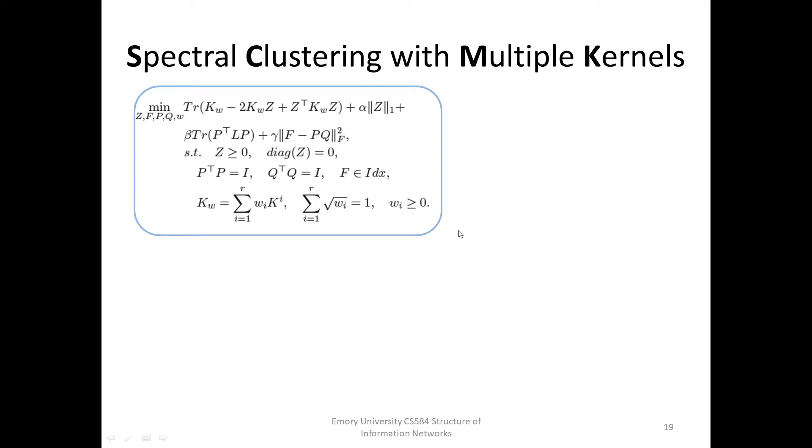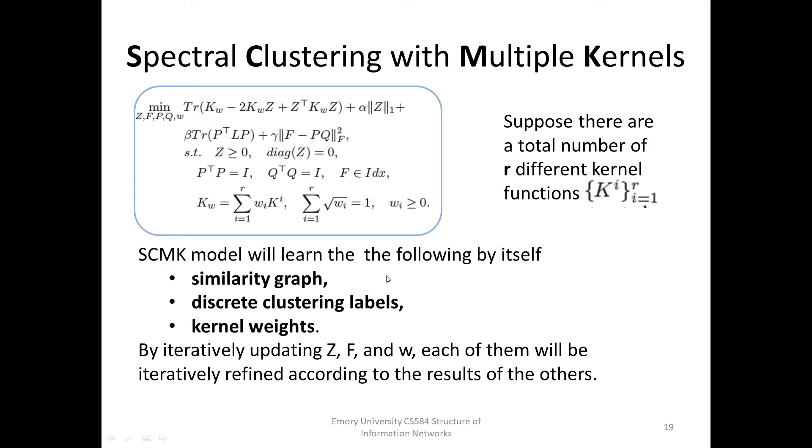Suppose there are a total number of R different kernel functions. Now, the above model will learn the similarity graph, discrete clustering labels, and kernel weights by itself. By iteratively updating Z, F, and W, each of them will be refined according to the results of the others.